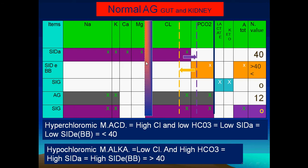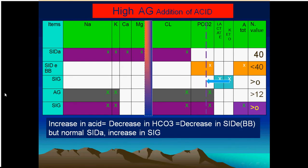In high anion gap conditions, loss of bicarbonate is not through the kidney or gastrointestinal tract. Instead, acids such as keto acids, lactic acids, formic acid, or methanol are added at the expense of bicarbonate, so bicarbonate decreases and the buffer base decreases. However, the strong ion difference remains the same — no change in sodium, no change in chloride, difference stays at 40. Only the buffer base bicarbonate changes. This is a high anion gap problem; the buffer base identifies it while the strong ion difference does not.